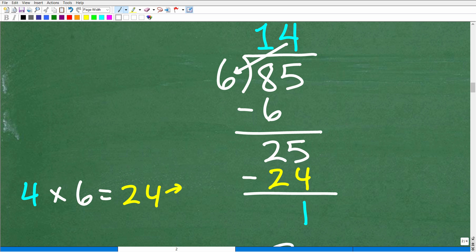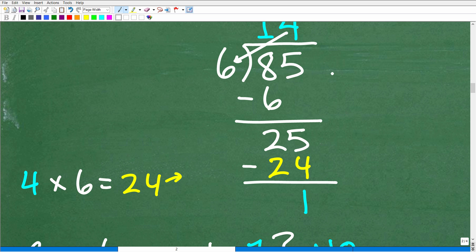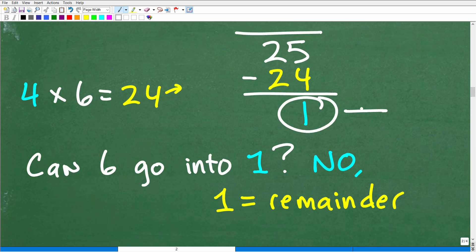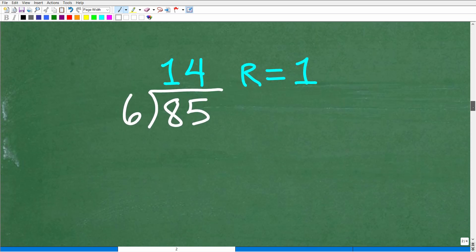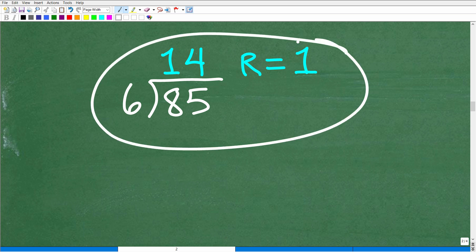So 25 minus 24 is 1. Can 6 go into 1? The answer is no. We're like, well let's just drop down another number. Well there is no other number here. There's no decimal point, nothing like that. So we don't have any more digits to drop down. So we are done. 6 cannot go into 1. So what does that mean? Well, this means this right there is the remainder. So 1 is the remainder. So let's put this all together. Here is our final answer. So 85 divided by 6 is 14 remainder 1. This is how you would express your answer, just like this: 14 R equal to 1. And you could even use fractions, but that's a different topic.